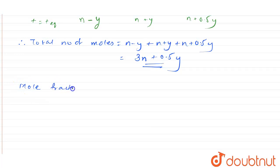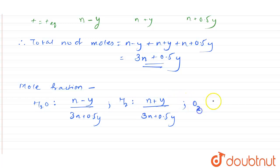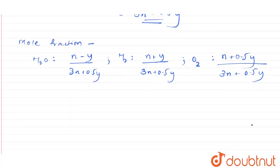Now calculating the mole fractions: for H₂O it is (n − y) / (3n + 0.5y); for H₂ it is (n + y) / (3n + 0.5y); and for O₂ it is (n + 0.5y) / (3n + 0.5y).